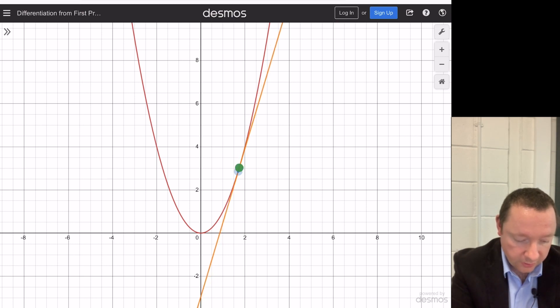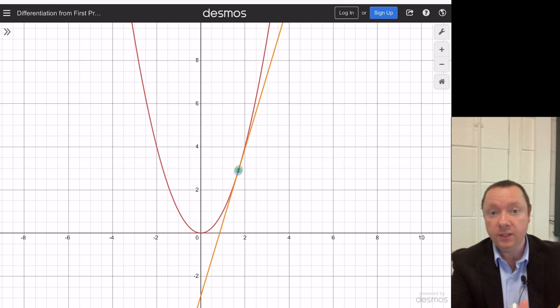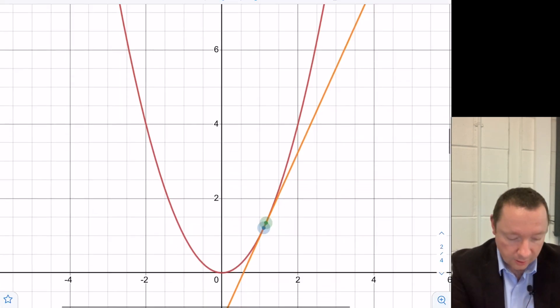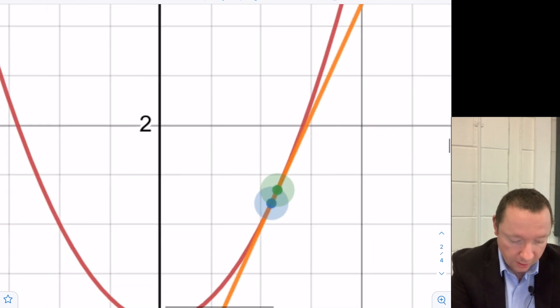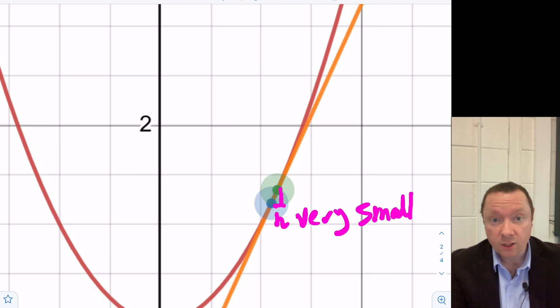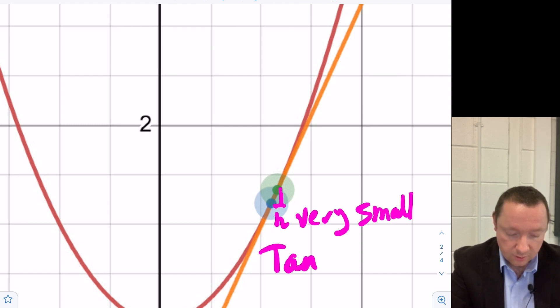And therefore at h, the distance along the x axis becomes nothing. As these points get closer and closer together, that distance here, that h becomes very small. In fact, when they're touching, when it is the gradient of the tangent, when it's actually a tangent, h would equal zero.